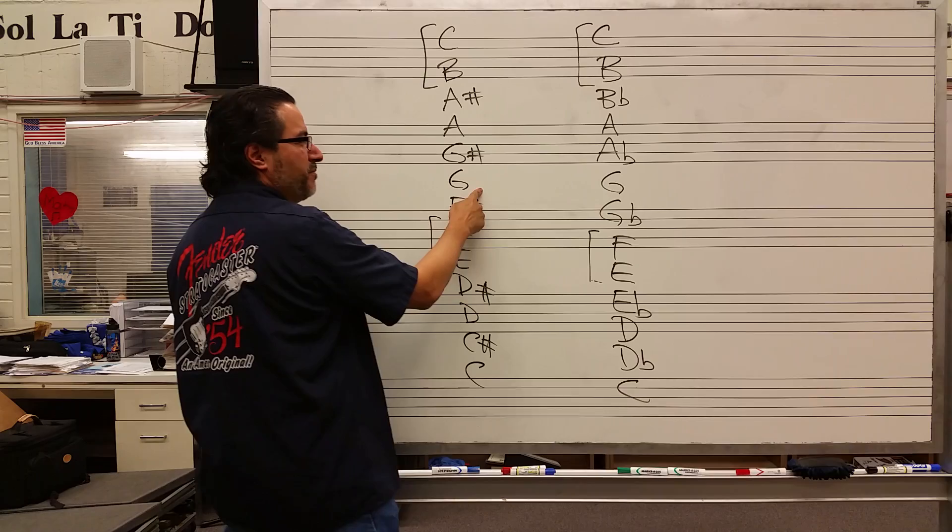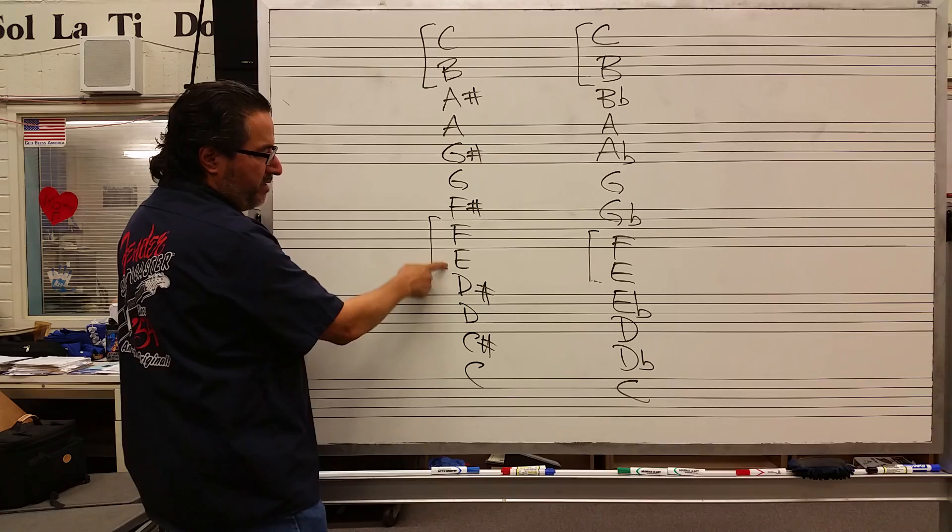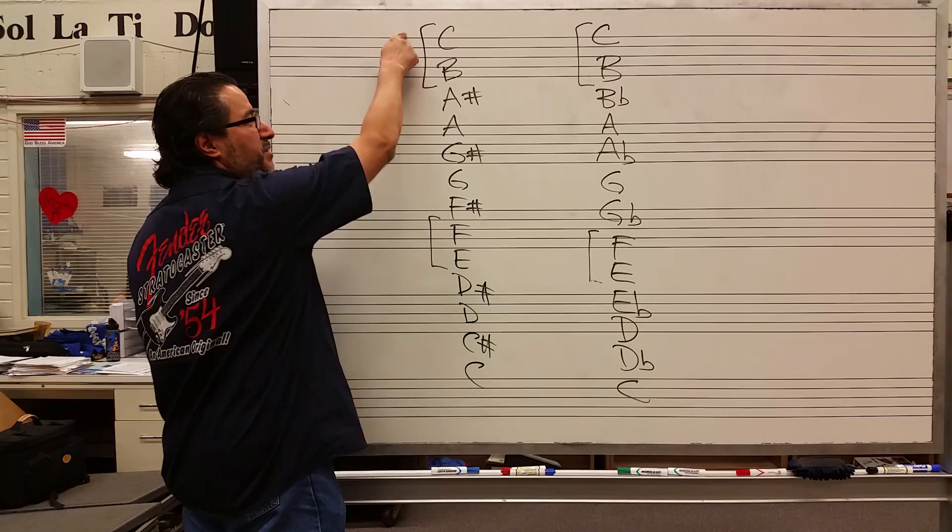Any single move in the chromatic scale is considered a half step. So from G to G-sharp would be a half step. We could also say from G to A-flat, because these are the same thing — they're enharmonic equivalents.